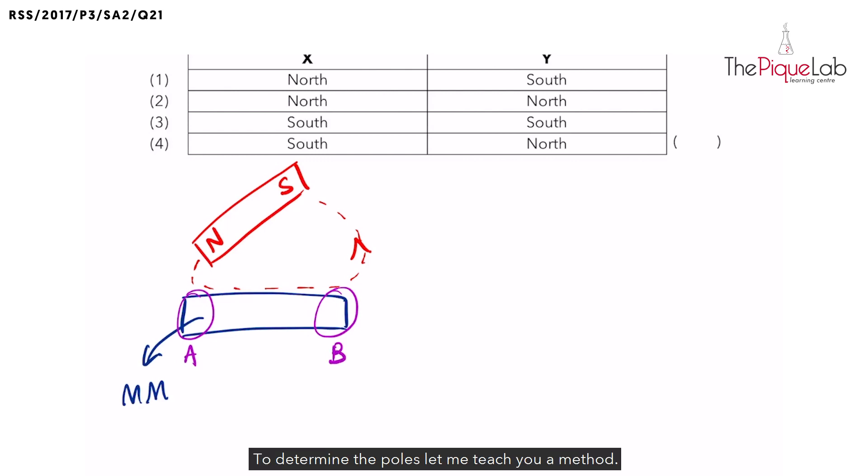To determine the poles, let me teach you a method. So take note of the pole that you are using to stroke. Over here, we are using the North Pole and we are stamping here first. So we are stamping on A first. So A will be our North Pole. And therefore, B will be the South Pole.